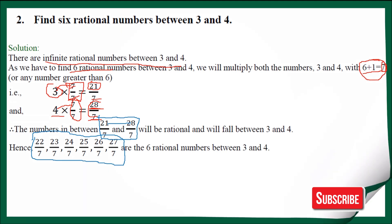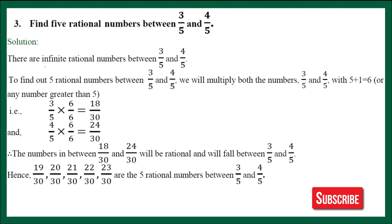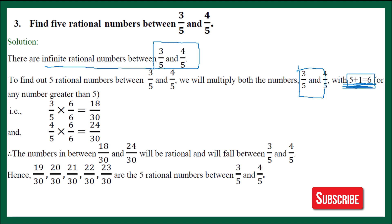Let's do the next one. Question number 3: Find 5 rational numbers between 3 upon 5 and 4 upon 5. In this question we have to find 5 rational numbers between 3 upon 5 and 4 upon 5. The method will be the same. Since we need to find 5 rational numbers, we will multiply and divide the numerator and denominator by 6. There are infinite rational numbers between 3 upon 5 and 4 upon 5. 6 comes from adding 1 to 5, since we need to find 5 rational numbers.